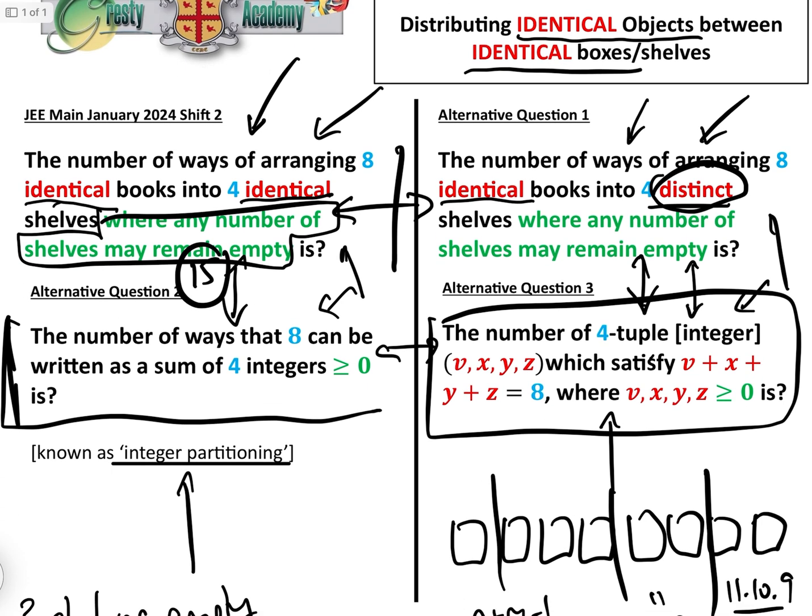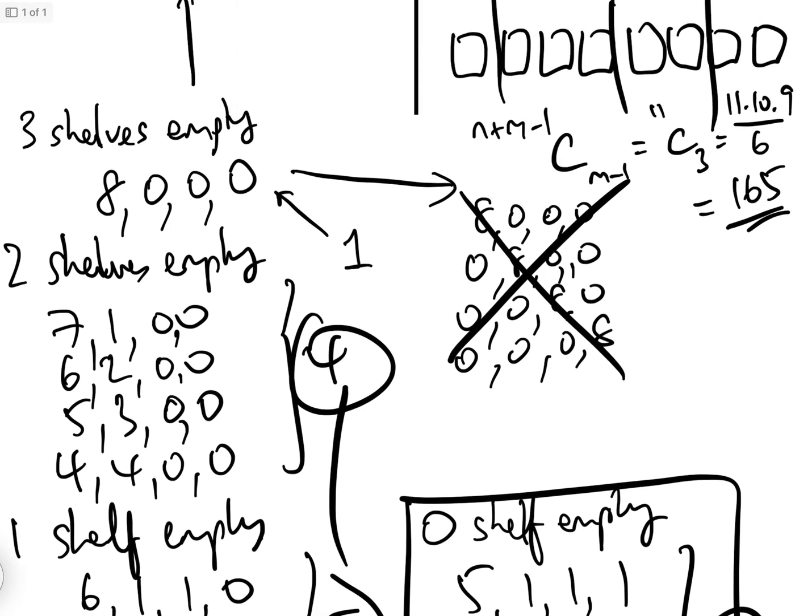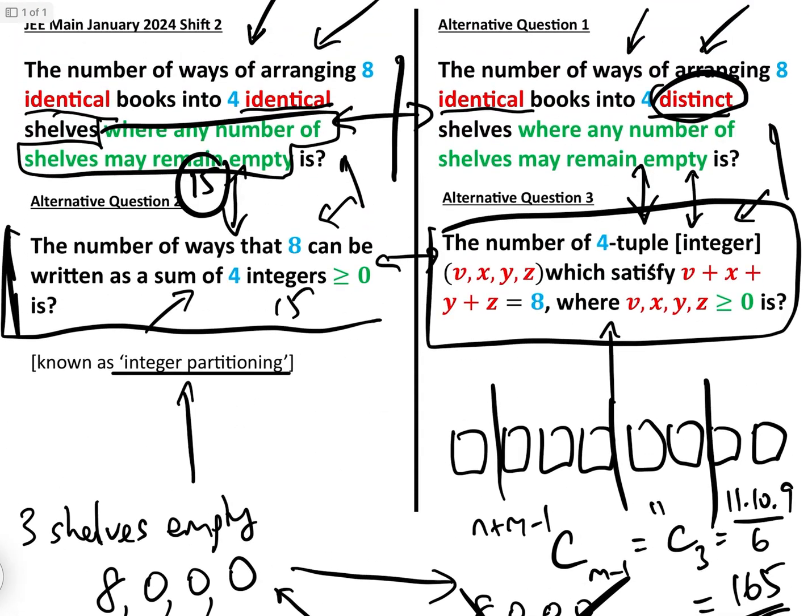And by the way, that is exactly the same method to how you would do that. The number of ways eight can be written as a sum of four integers is all of these. We've already listed them all. So the answer to that one, obviously, is 15 as well, because it is the same question as that. Well, I hope you found this useful. If you have, please like this video by pressing the little thumbs up button at the bottom and subscribe to the Gressy Academy YouTube channel. Thank you.